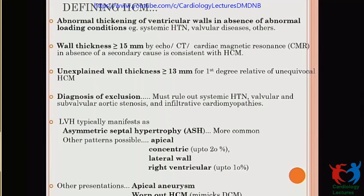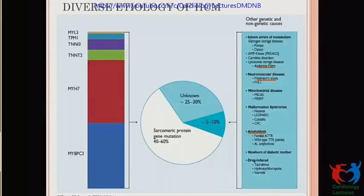The various forms include asymmetrical septal hypertrophy, which is most common; however, apical hypertrophy, concentric hypertrophy, lateral wall involvement, right ventricular involvement, apical aneurysm, and burned-out HCM are also not uncommon. Regarding etiology, around 40–60% have documented sarcomeric protein gene mutations, among which myosin-binding protein C3 mutation and myosin heavy chain are the two most common. Five to ten percent have storage disorders or mitochondrial diseases, with Fabry disease, Danon disease, and amyloidosis deserving special mention. A large chunk — 25–30% — remains of unknown etiology.